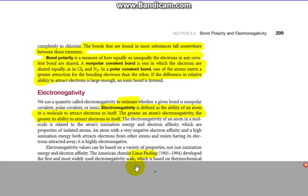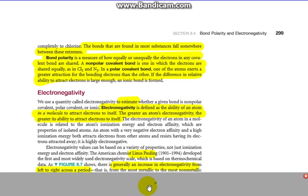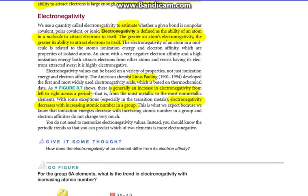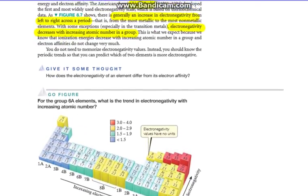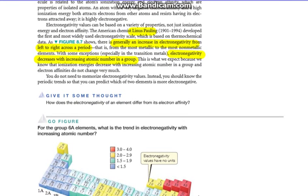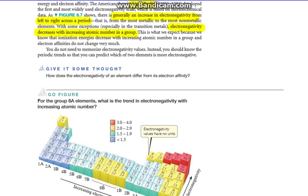Electronegativity values can be based on a variety of properties. The American chemist Linus Pauling developed the first and most widely used electronegativity scale, which is based on thermochemical data. If we take a look here, there's a chart at the bottom. You don't have to memorize it, but you'll be able to see some trends. Just like with other things on the periodic table, there are certain trends.